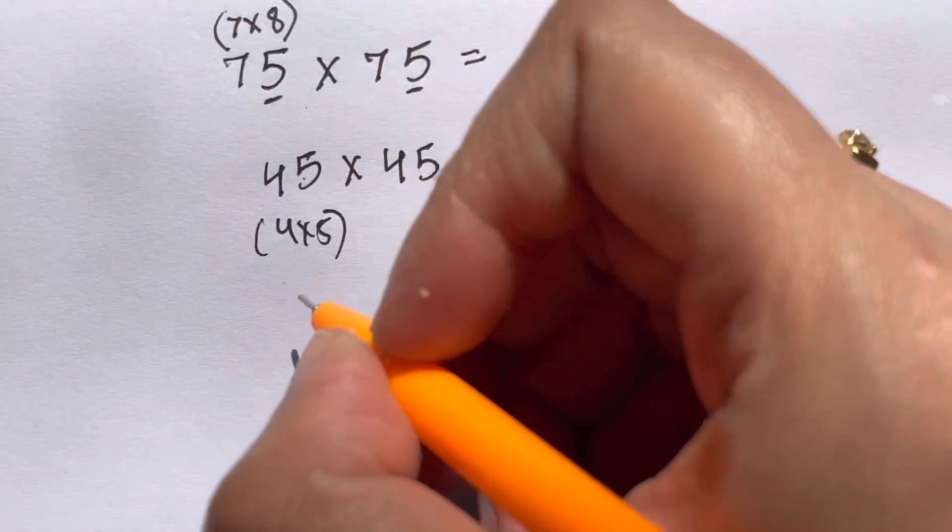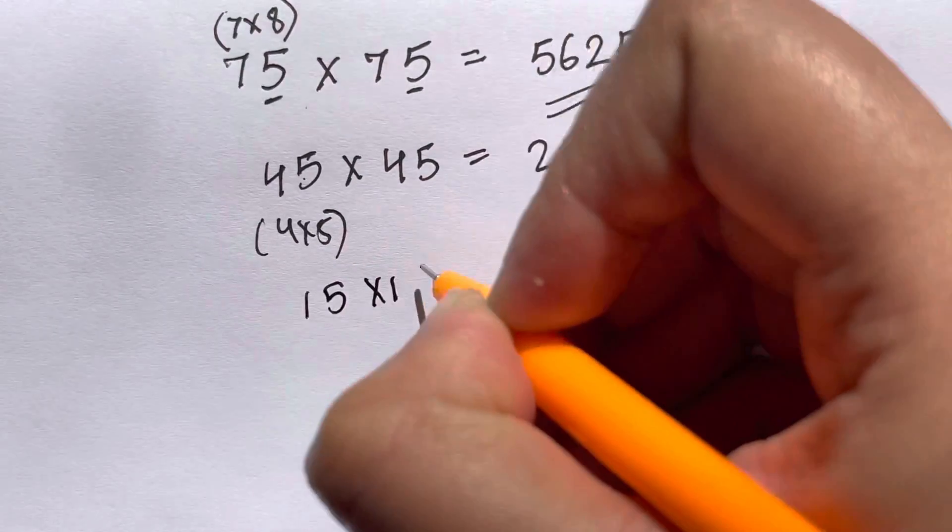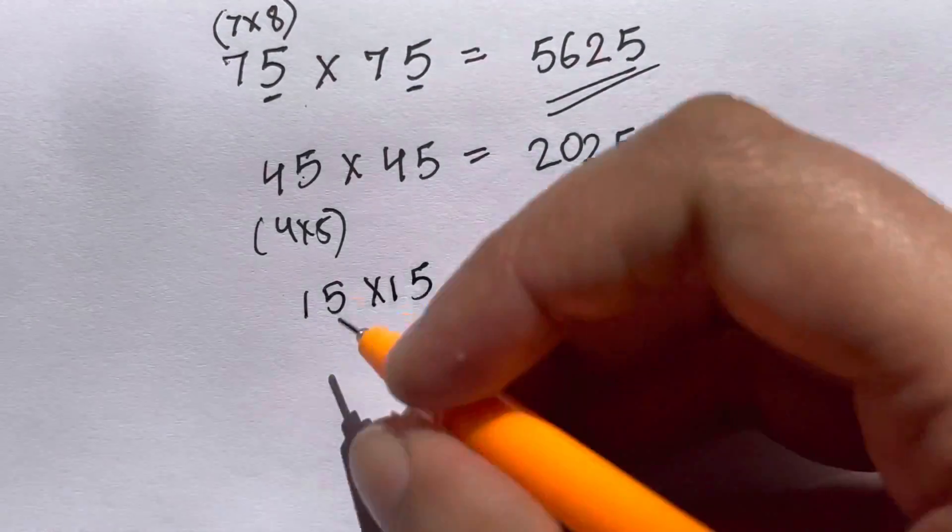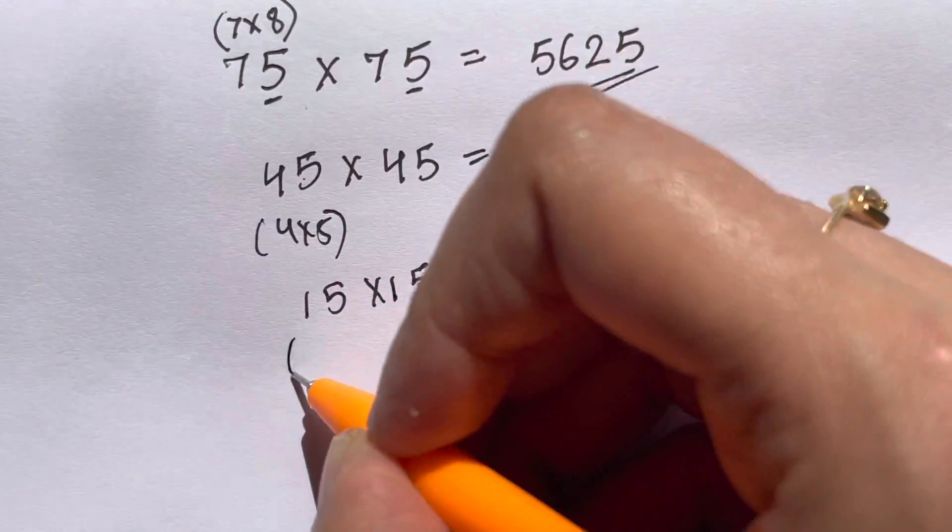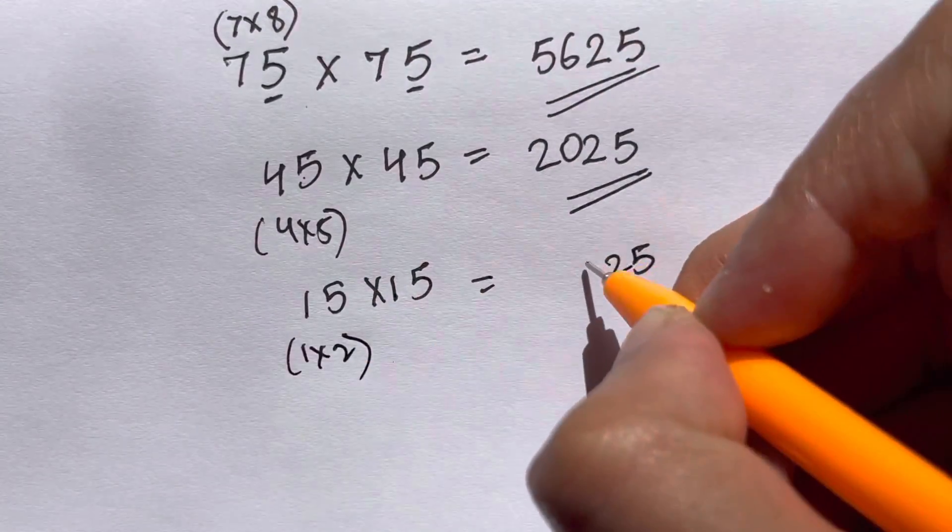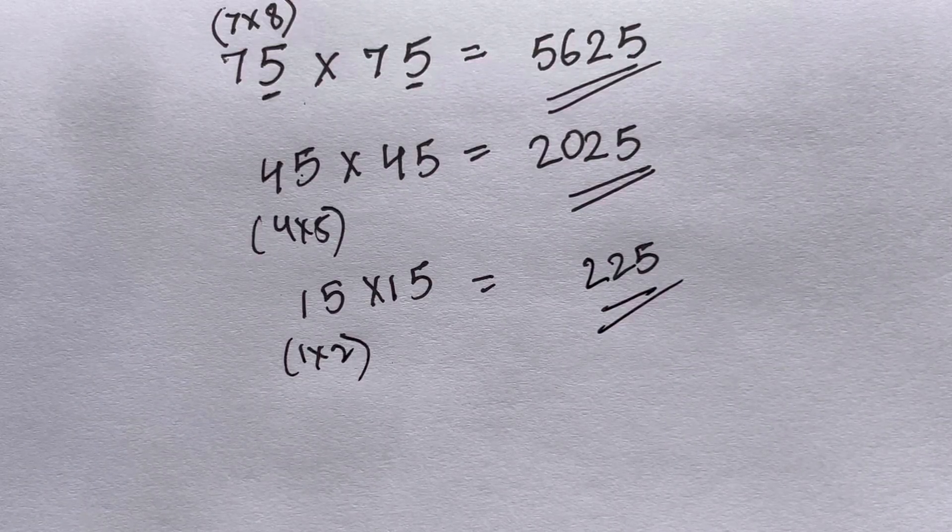Let's try another example: 15 times 15. Who's first to give the answer? 5 times 5 is 25, and what's the next consecutive number after 1? That's 2, so 1 times 2 is 2. Your answer is 225.